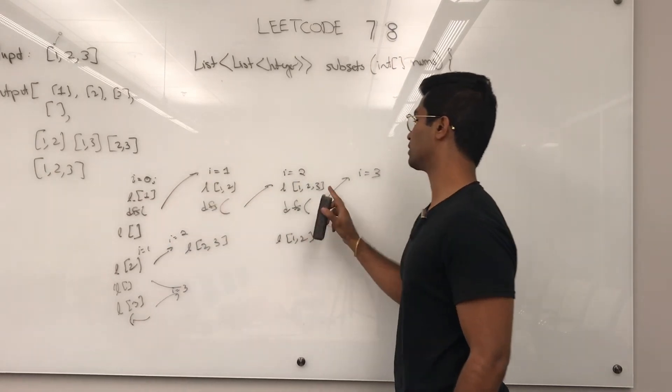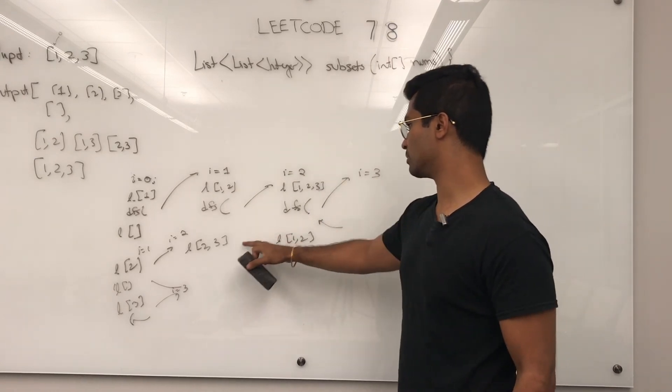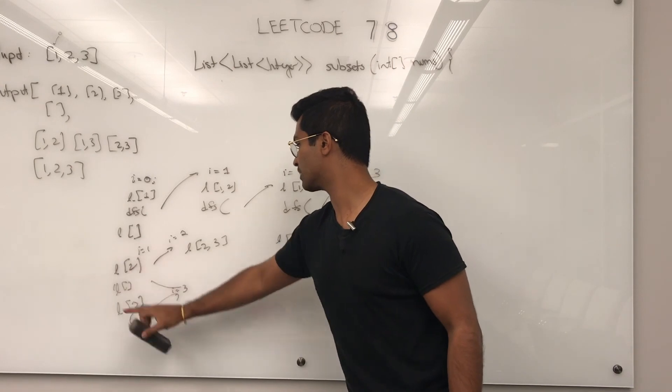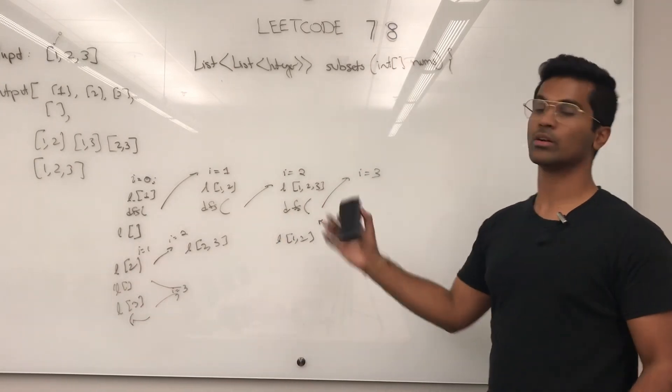But this guy is going to get added last. First it's going to one, two, one, two, three, and then one, two, then two, three, two, and then three. So one, two, three, four, five, six, seven, eight. That's pretty much how this recursive stack is going to look.